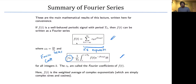Just like we have a Taylor series expansion learned in calculus, we have this Fourier series expansion. The goal is that f(t) is some sort of weighted average of complex exponentials, which are basically just sines and cosines.